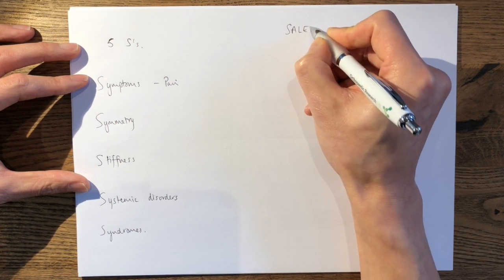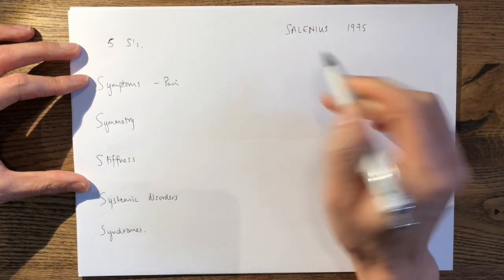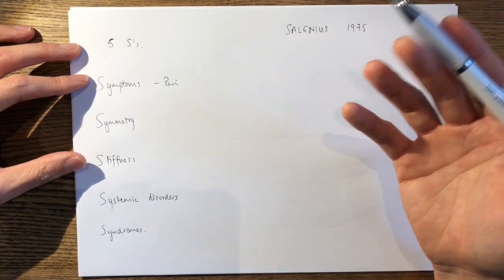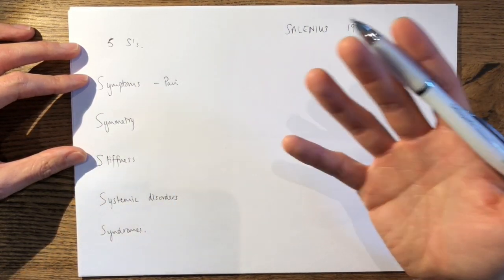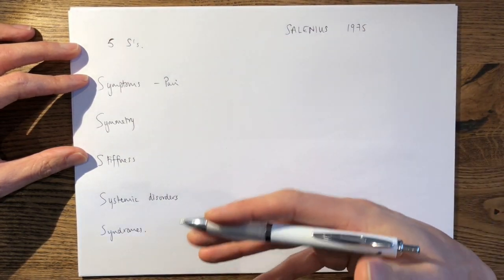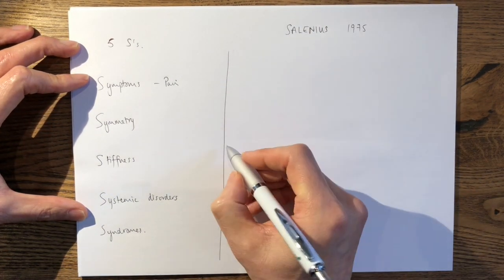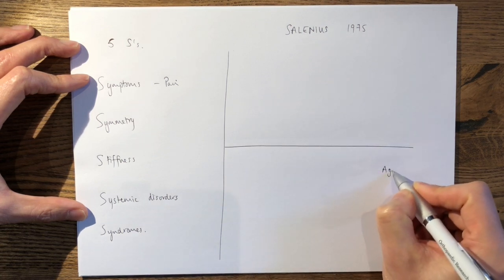So Salineus described in 1975, it was in the JBJS, he looked at approximately 1,500 children from birth and recorded what was the normal exhibited tibio-femoral angle in the coronal plane. So on the y-axis you have your angle and on the x-axis you have your age.